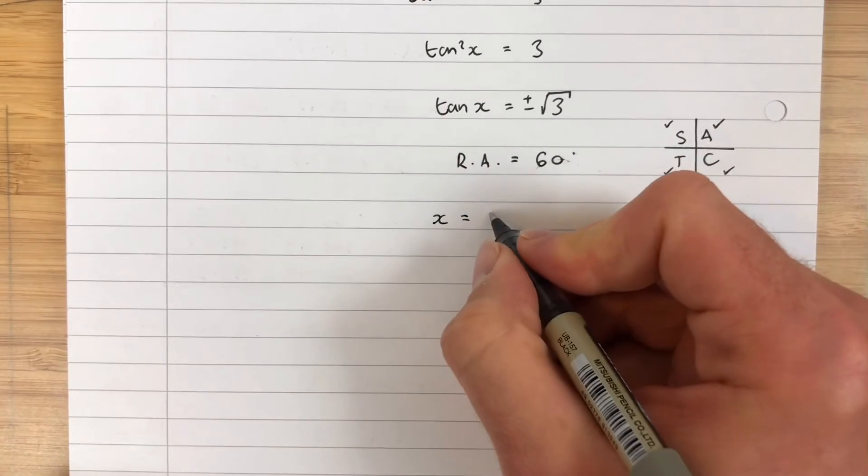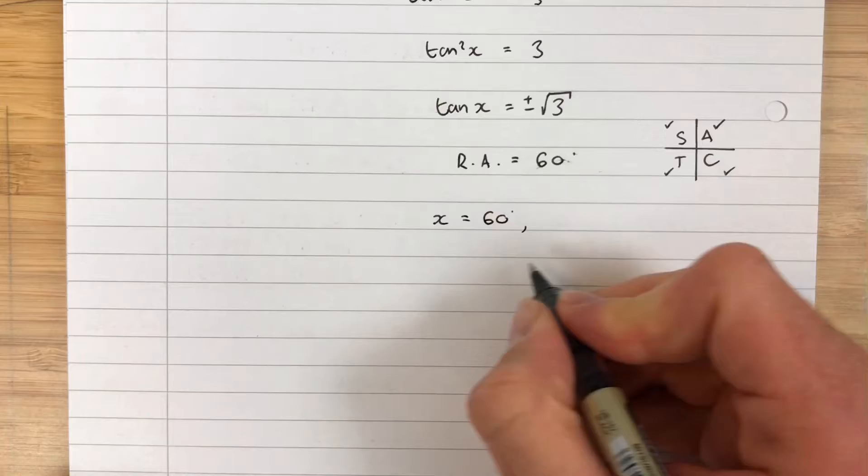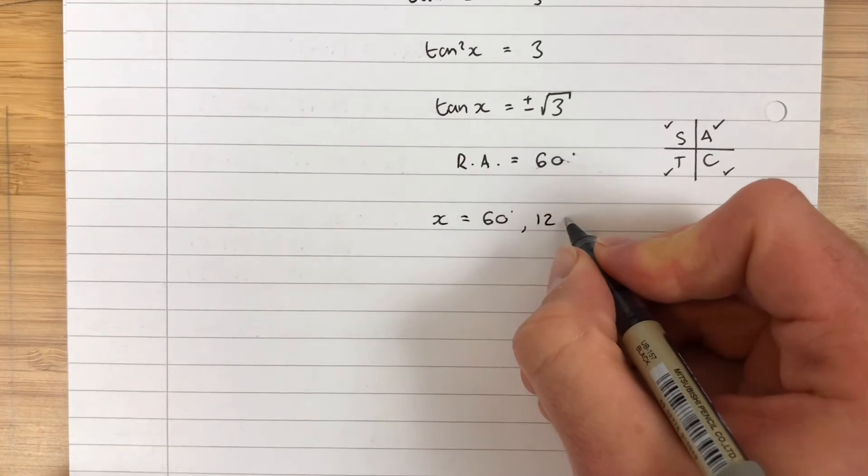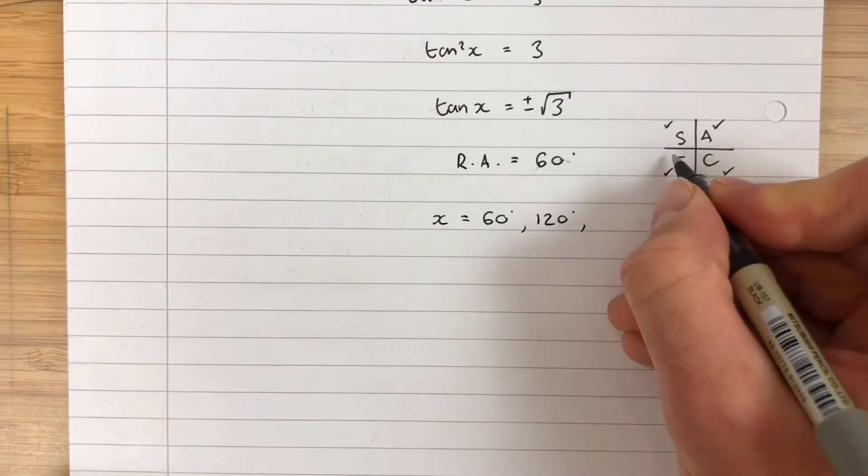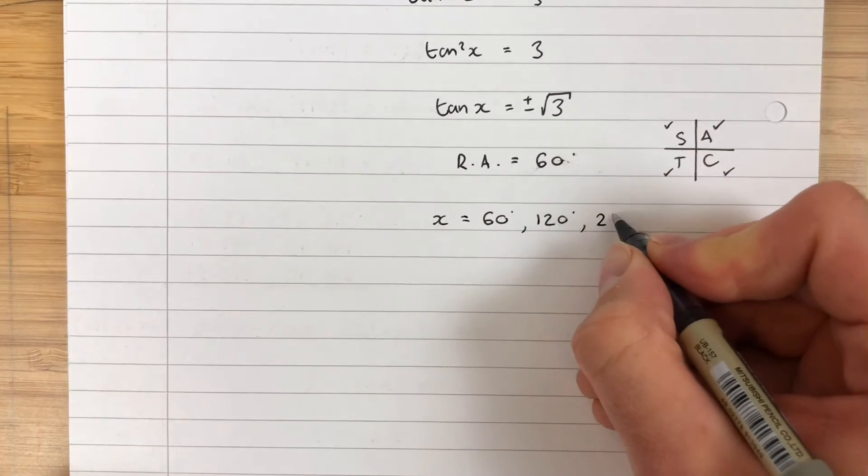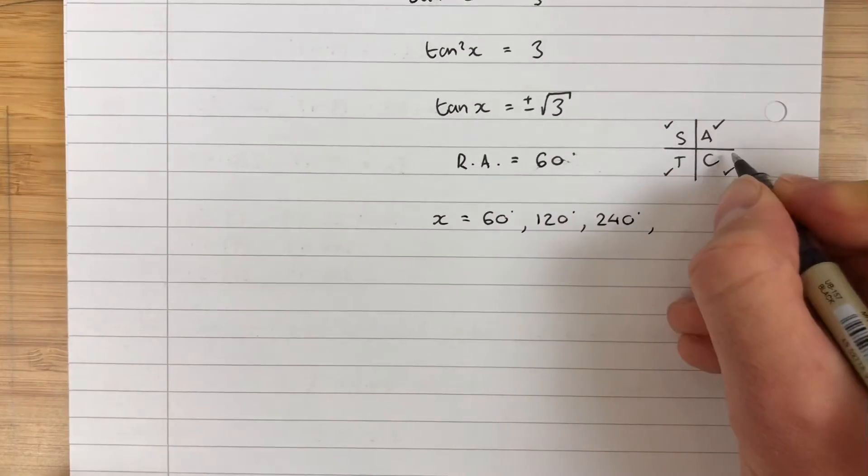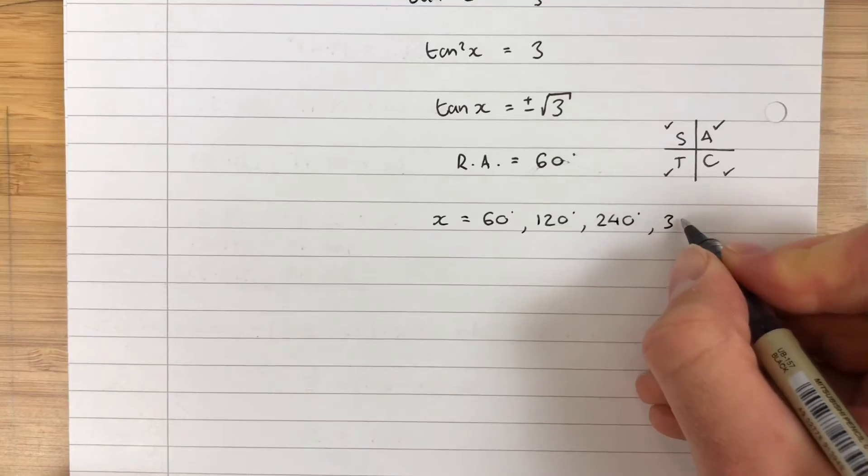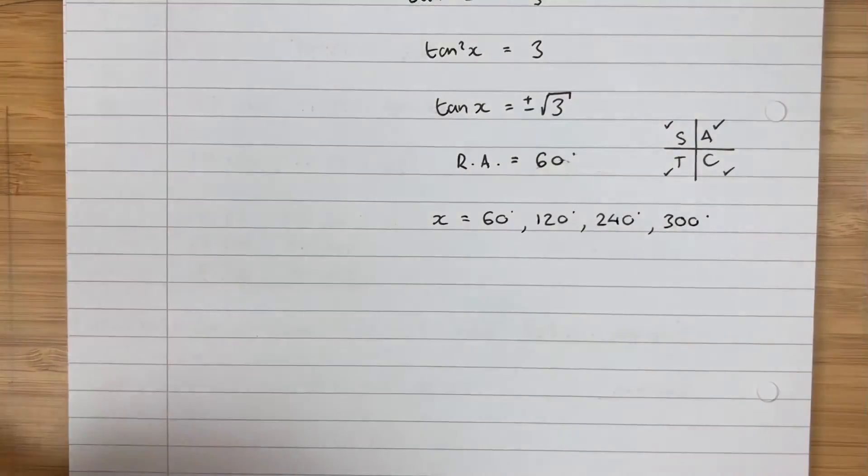First quadrant is just my related angle. Second quadrant is 180 minus my related angle. Third quadrant is 180 plus my related angle. And in the fourth quadrant, 360 minus my related angle.